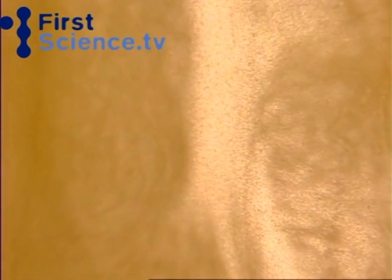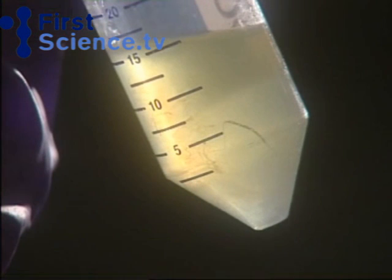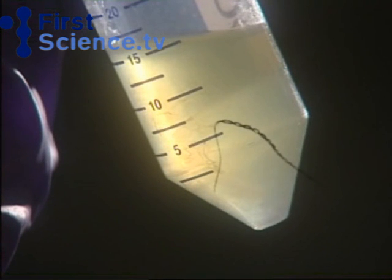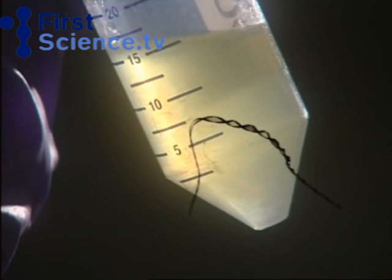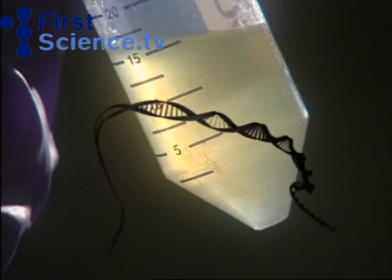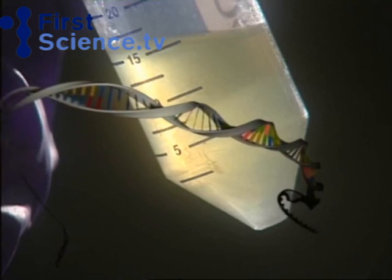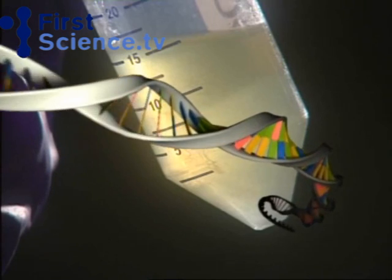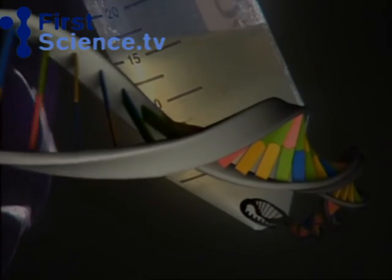Genetic engineering involves adding an extra piece of DNA to a living cell. Scientists will have studied this piece of DNA for many years before putting it into a cell. Inside the cell, special enzymes cut a length of potato DNA into two halves.